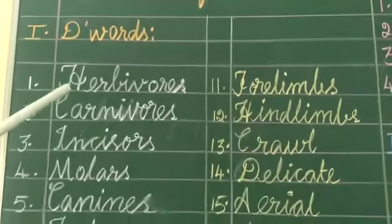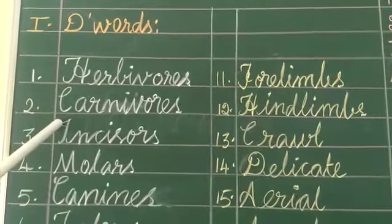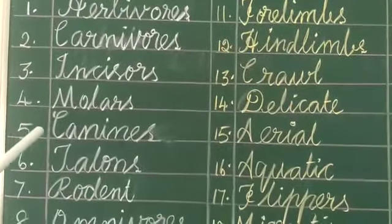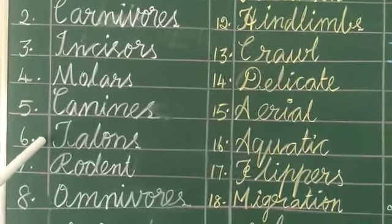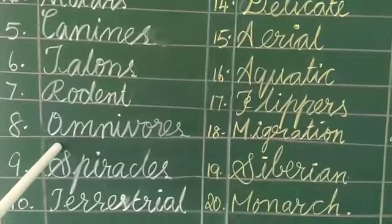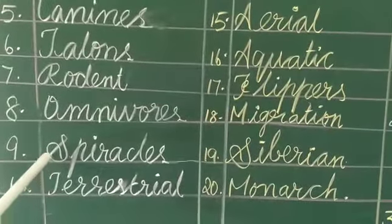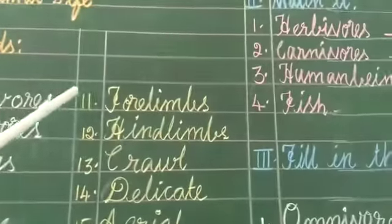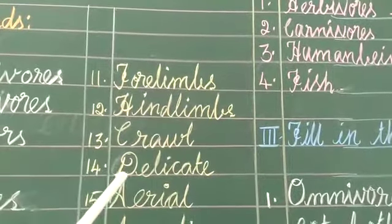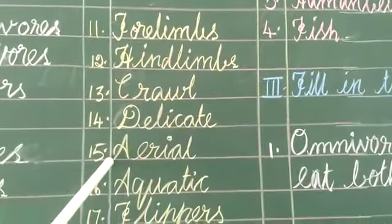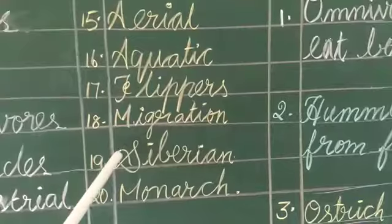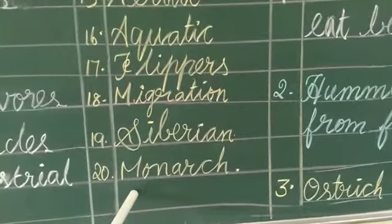D.O.'s: Heavy O's, Carnivores, Incisors, Mothers, Canines, Molars, Rodent, Omnivores, Spiracles, Terrestrial, Fore limbs, Hind limbs, Clawed, Delicate, Aerial, Aquatic, Flippers, Migration, Siberian, Monarch, Omnivores.